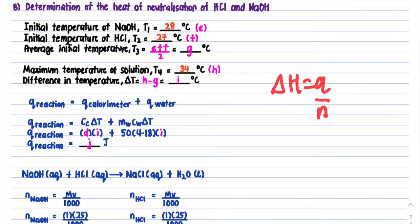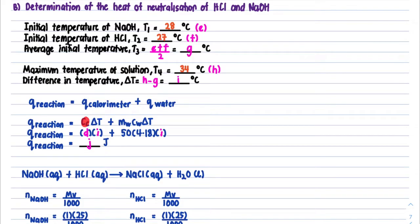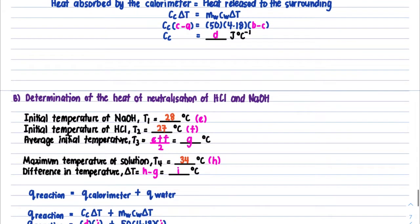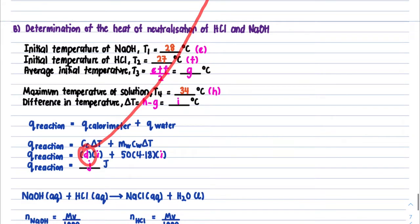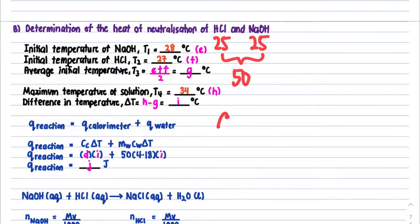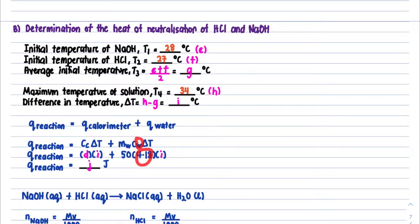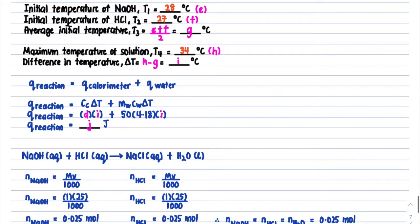Delta H = Q / n. To calculate Q: Q = (CC × ΔT) + (mCw × ΔT). The CC is the value found from Part A. The mass of water is 50 g because HCl is 25 ml and NaOH is 25 ml — when combined they form 50 ml of water, and since density of water equals 1, mass of water = 50 g. Cw = 4.18. The unit for Q must be in Joules.